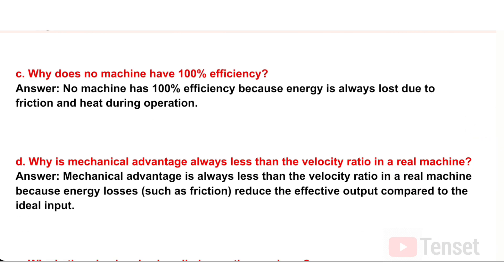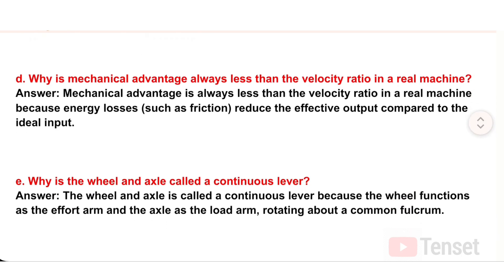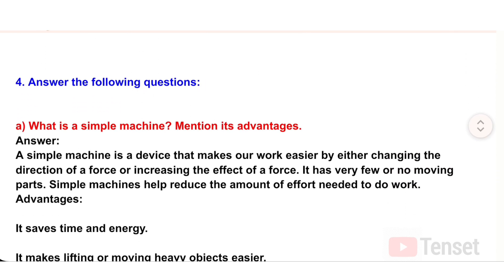D) Why is mechanical advantage always less than the velocity ratio in a real machine? Answer: Mechanical advantage is always less than velocity ratio because energy losses such as friction reduce the effective output compared to the ideal input. E) Why is the wheel and axle called a continuous lever? Answer: The wheel and axle is called a continuous lever because the wheel functions as the effort arm and the axle is the load arm, rotating about a common fulcrum.